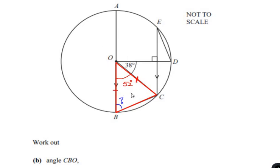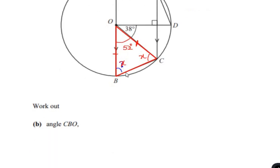Since the two sides are the same, angle B becomes equal to angle C. Let us consider angle B as x, so angle C is also x. By using the angle sum property of a triangle, we can write: angle O, which is 52 degrees, plus angle B as x, plus angle C as x, will all add up to 180 degrees.